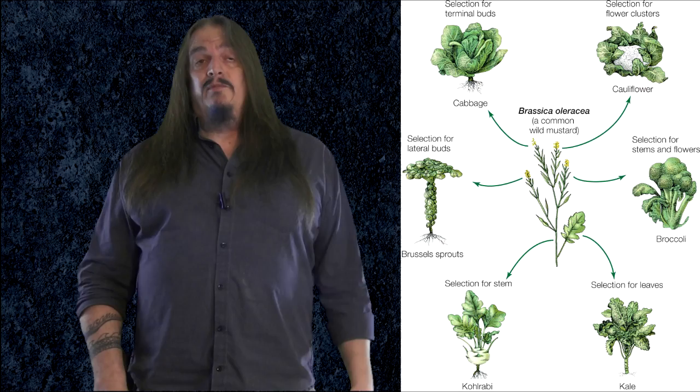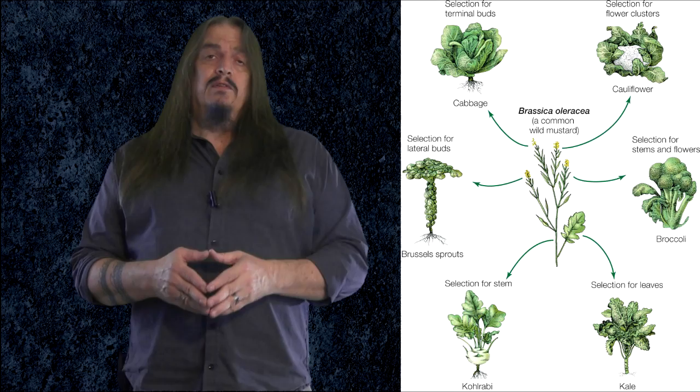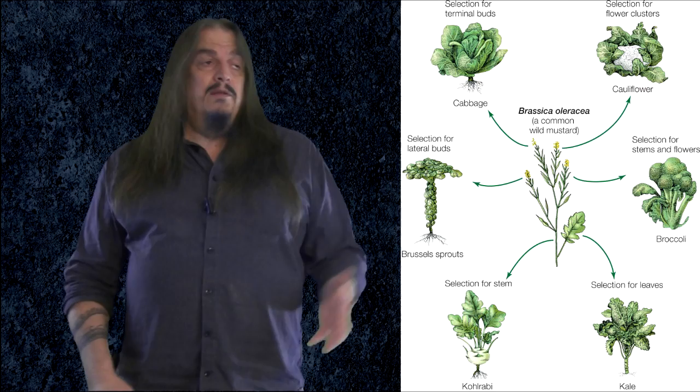Similarly, kale, kohlrabi, cabbage, cauliflower, broccoli, and brussel sprouts are all the same species as the wild mustard plant, Brassica oleracea. Although these all look very different from each other, they're all part of the same pan genome, meaning that they all stand from the same genetic ancestry. They're just different modifications of that.